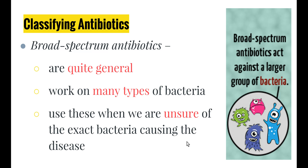We can also classify antibiotics into two simple categories. The first is broad spectrum antibiotics, which are quite general and work on many types of bacteria. These are the types of antibiotics used if you are in a serious accident in hospital and are at risk of infection due to open wounds. The first thing they will do is give you a broad spectrum antibiotic to try to attack any bacterial infection that may be taking place inside your system.